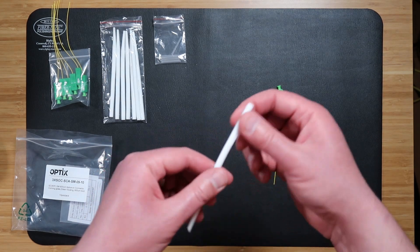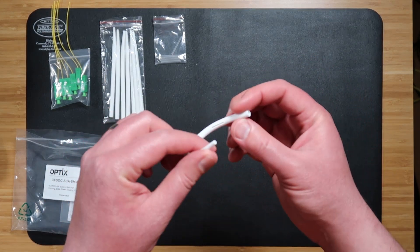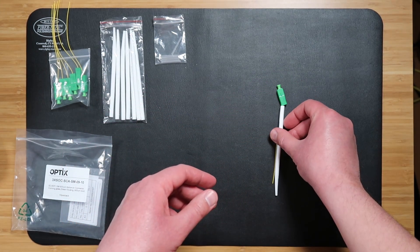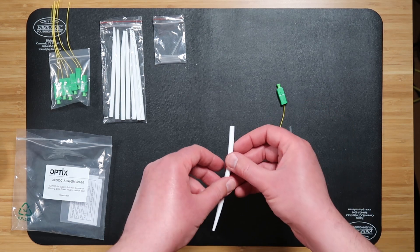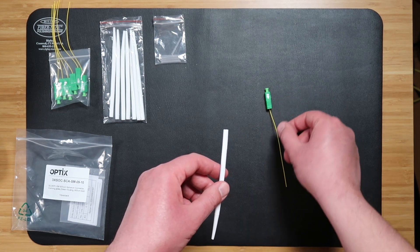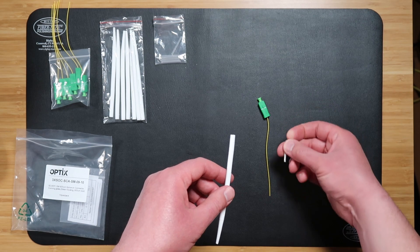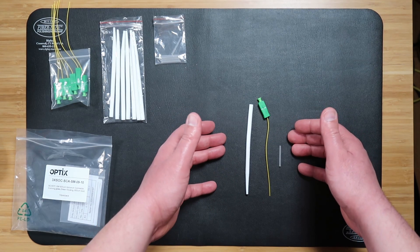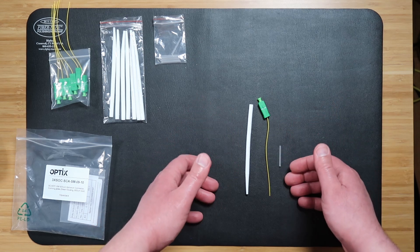All of that will be covered in a silicon boot that will be sliding along the length of the fiber stub, protecting the 900 micron fiber itself as well as the fusion sleeve. It's a simple solution. If you know how to fusion splice, you can do splice-on connectors.